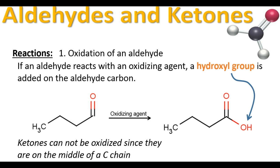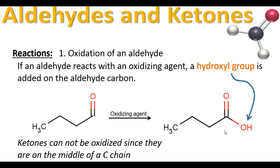Let's take a look at some aldehyde and ketone reactions. The first is oxidation of an aldehyde. If an aldehyde reacts with an oxidizing agent — a compound with oxygen in it — a hydroxyl group is added onto the aldehyde carbon. We take our aldehyde, add an oxidizing agent, and a carboxylic acid is formed. Ketones cannot be oxidized since they are in the middle of the chain, so this oxidation only takes place with aldehydes.